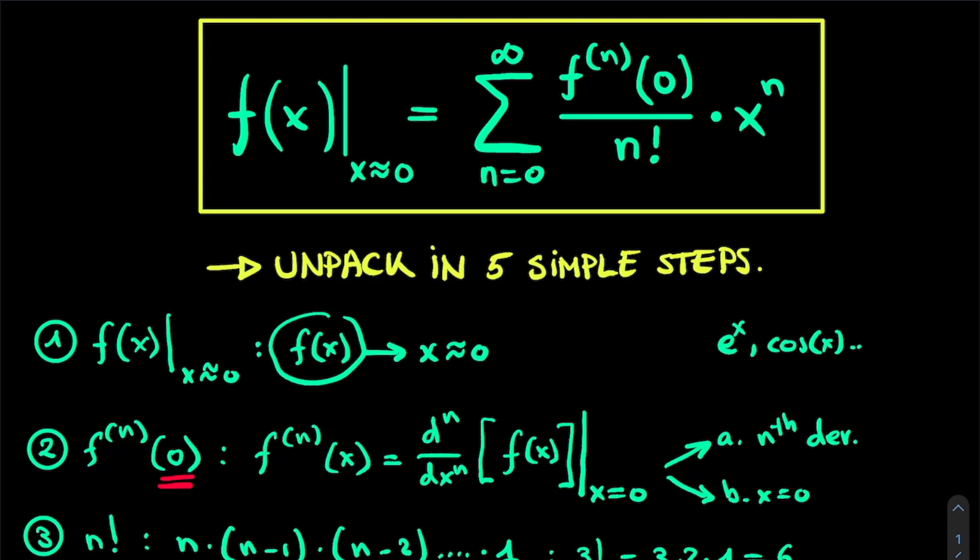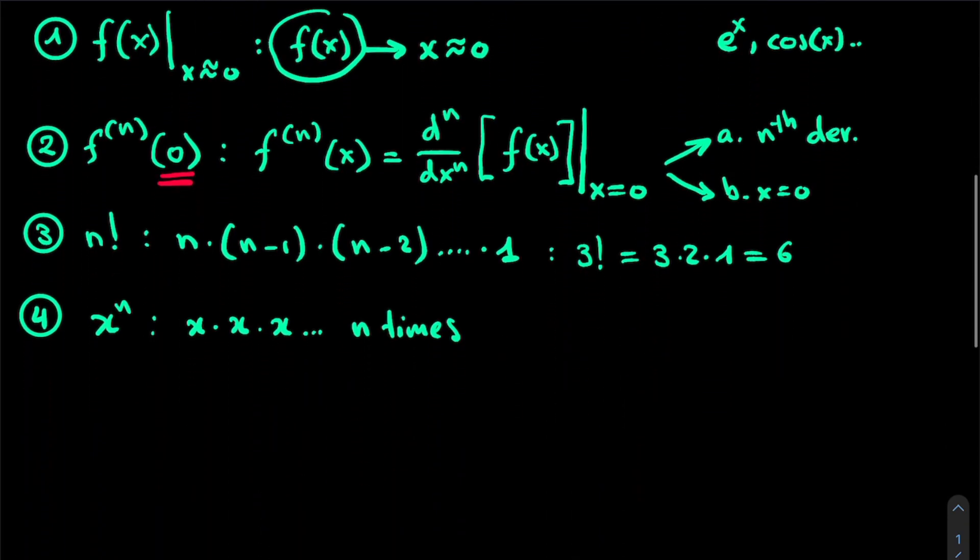Now this n is a summation index, which means that we start from n is equal to 0, and we sum all the way up to infinity. So let's look at what this looks like. So we have this large summation symbol, which takes some practice to properly write down, of n is equal to 0 to infinity. Now what does this mean?